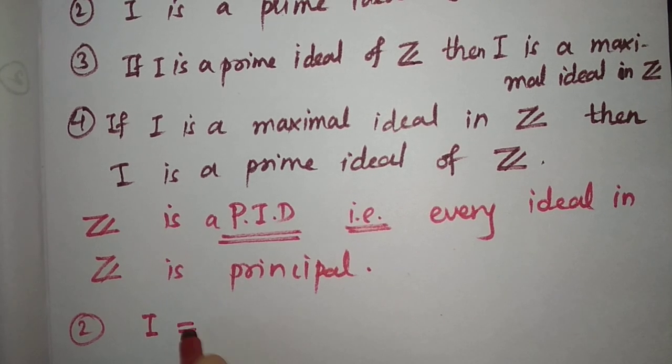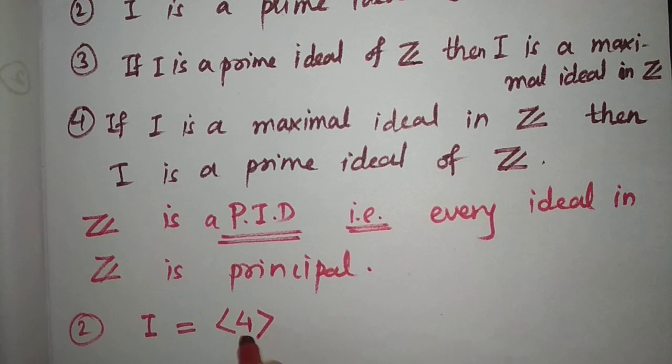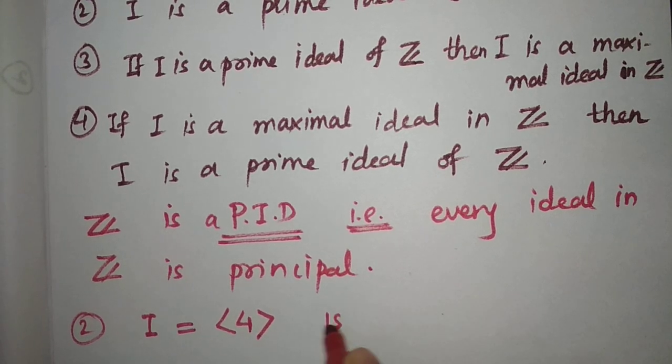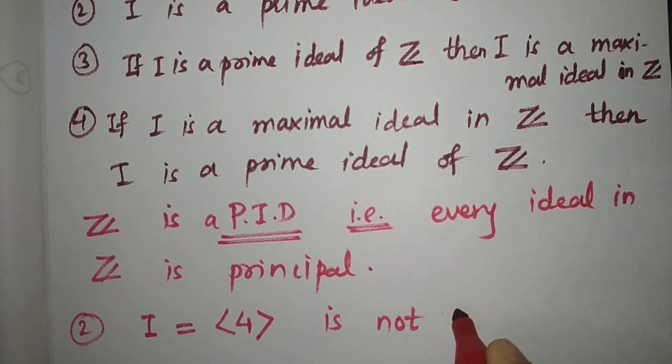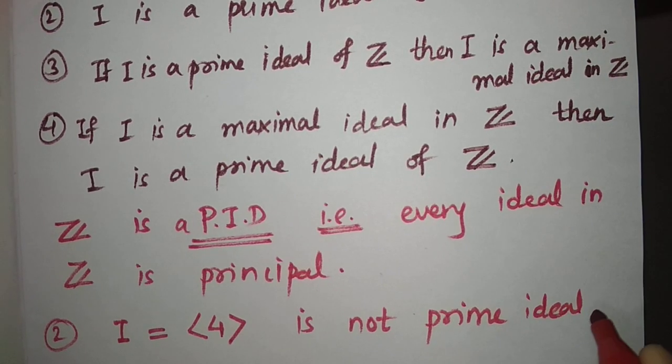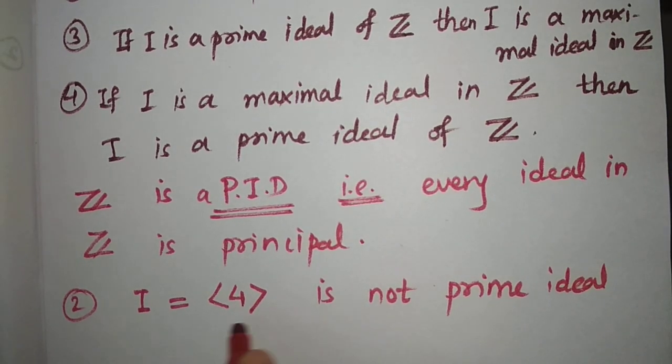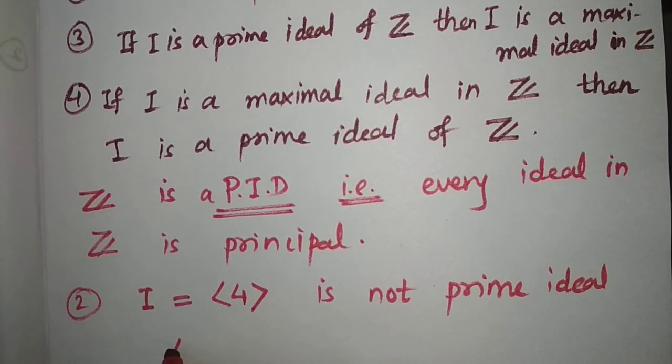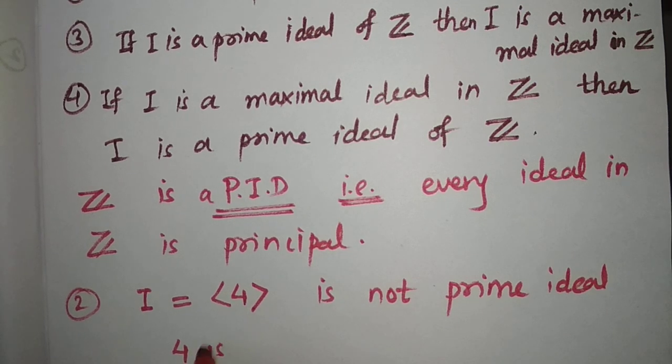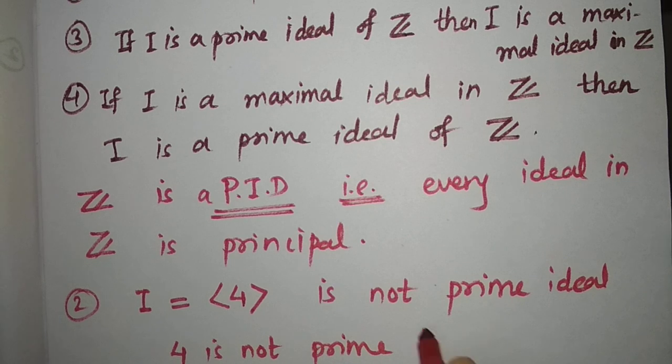Take I as the ideal generated by, say, 4. Then this is not a prime ideal in Z because 4 is not prime in Z.